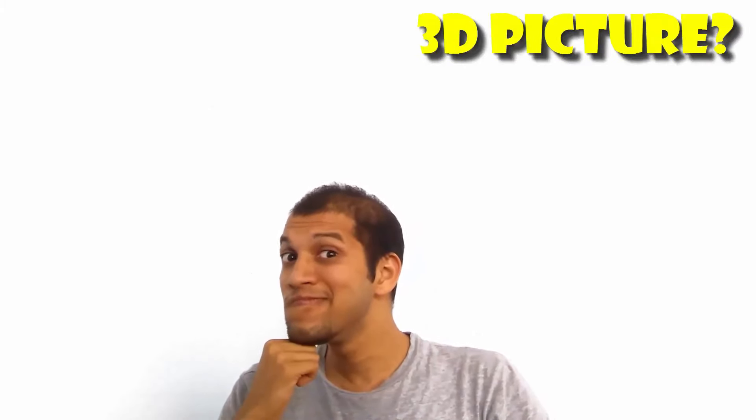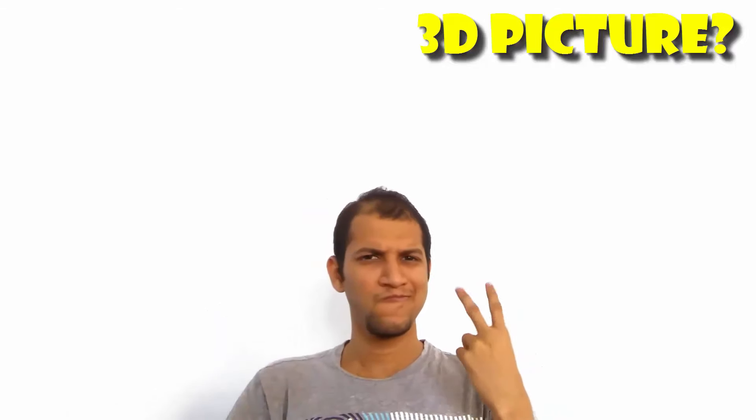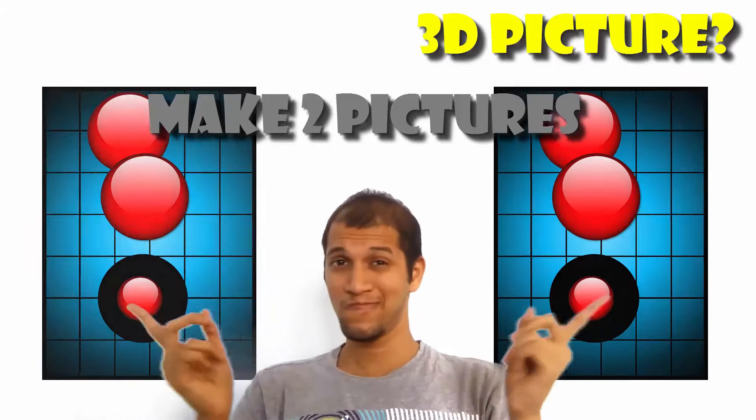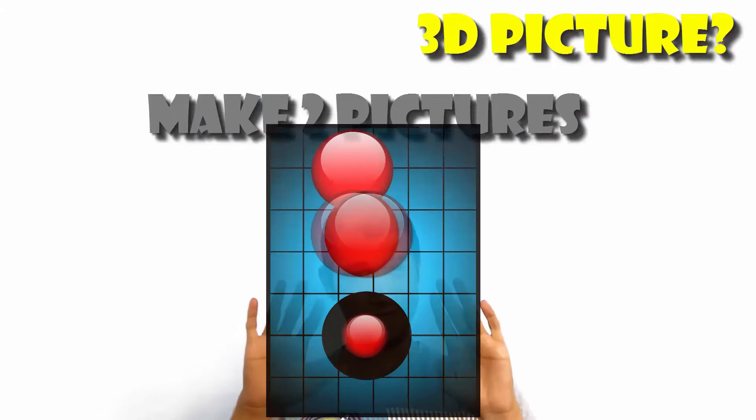So how do you make a 2D picture appear 3D? Simple. You need to make two pictures. One for the left eye and one for the right. The objects must be appropriately shifted depending upon what depth you want to convey.